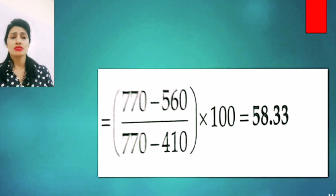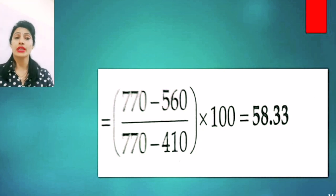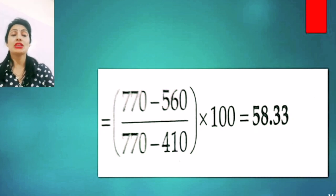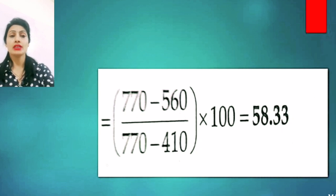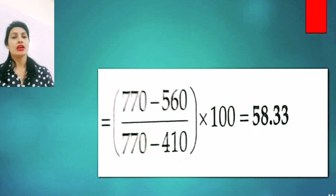You will notice there is no unit for viscosity index. Because in the formula, all values are in seconds — 770 seconds, 560 seconds, 410 seconds — and the seconds cancel out in the numerator and denominator. So, viscosity index has no unit.